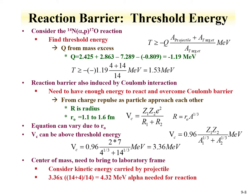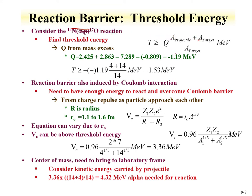Applying this to the Rutherford reaction, we take our Q value and masses, apply the threshold energy equation, and find a threshold energy of 1.5 MeV. This is the minimum energy for the reaction to occur, but it does not yet account for the Coulomb barrier.